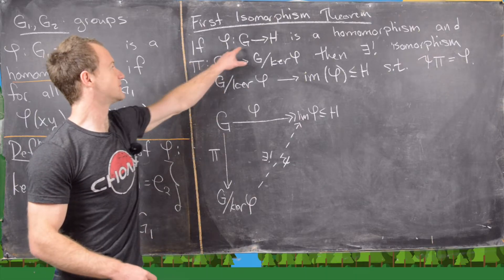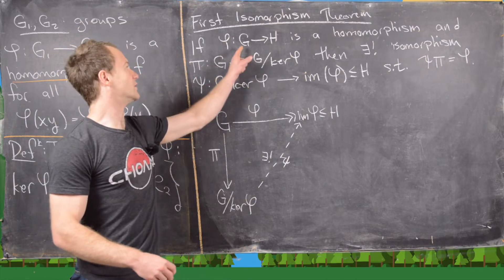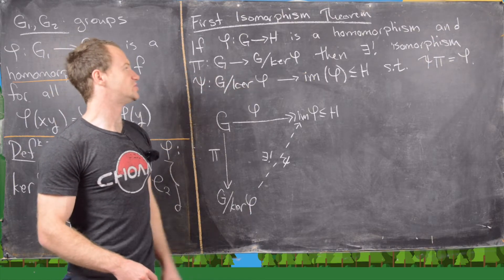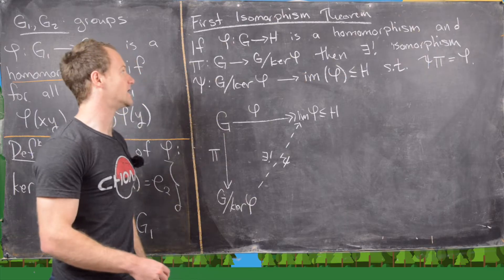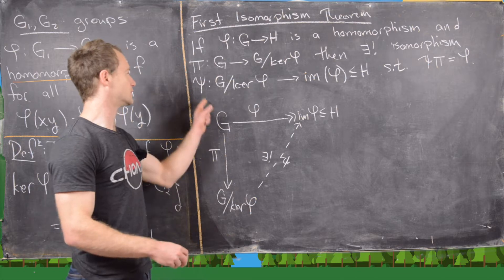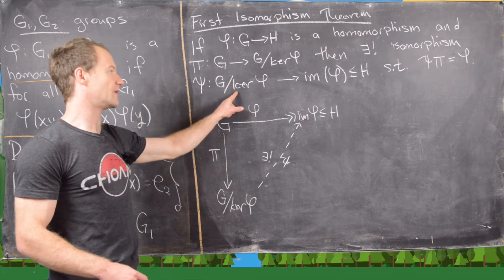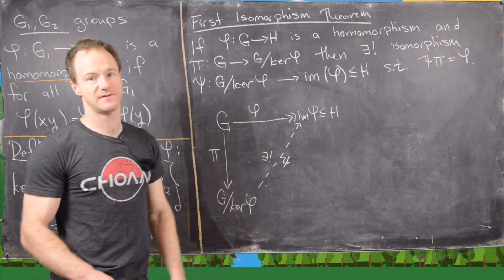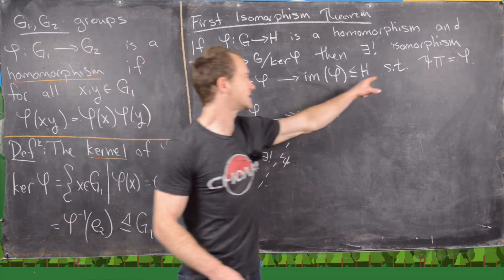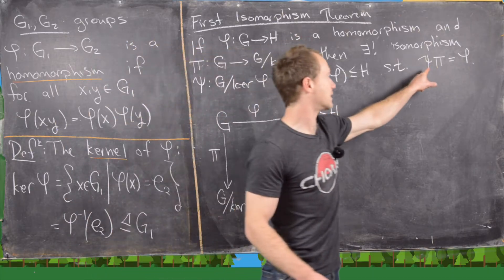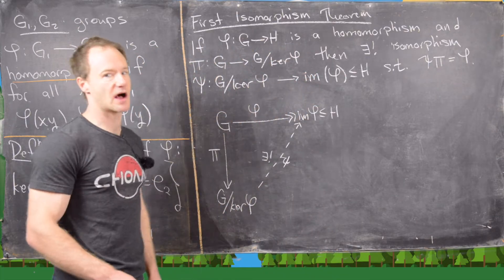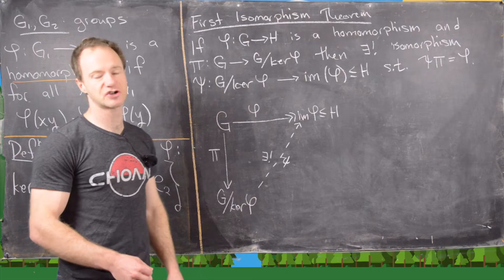So suppose we have a homomorphism phi from G to H. We have the projection homomorphism pi from G to G mod the kernel. Then there exists a unique isomorphism psi from G mod the kernel up to the image of phi, which is a subgroup of H. These all interact so that psi composed with pi equals phi.